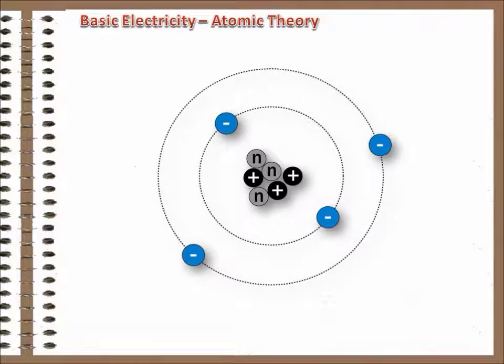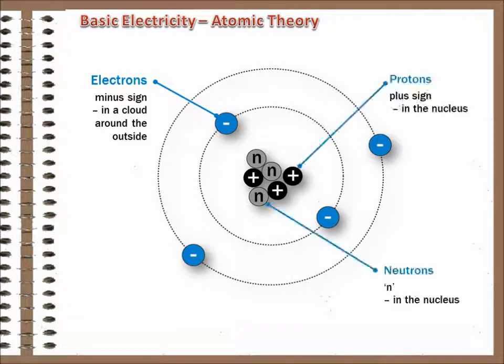Here's a drawing of an atom. The particles with the minus signs are called electrons. The center of an atom, the nucleus, contains protons and neutrons.